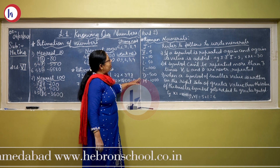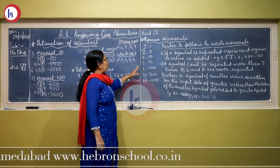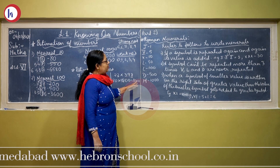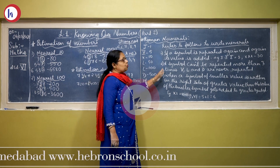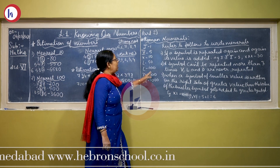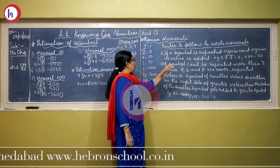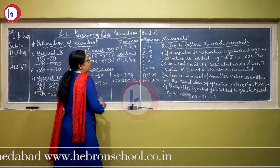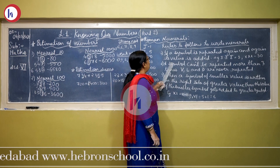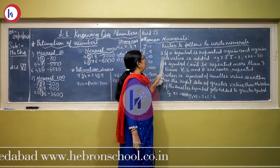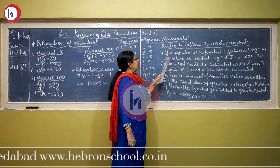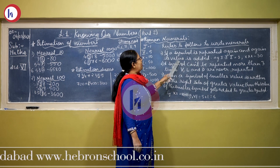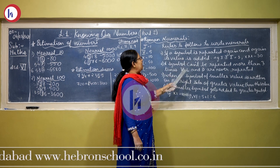Before writing the numbers in Roman numerals, we have certain rules to be followed. The first rule is: if a symbol is repeated again and again, each value is added. For example, I taken 3 times gives 1 plus 1 plus 1 equals 3.